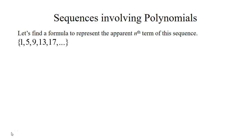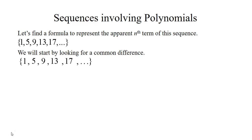Let's find a formula for this sequence. We're going to start by looking for a common difference between the terms. If we subtract 5 and 1 we get 4. If we subtract 9 and 5 we also get 4. Adding 4 to 9 gives us 13, and another 4 will give us 17. So it looks like our common difference is 4.